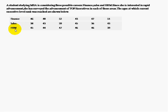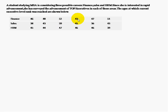She studied at which age a person in that particular field is getting the executive level rank. In the finance sector, consider a person who at age 46 got the executive level rank; the second person at 48, the third at 52, the fourth at 43, the fifth at 47, and the last person at age 51 got the executive level rank.